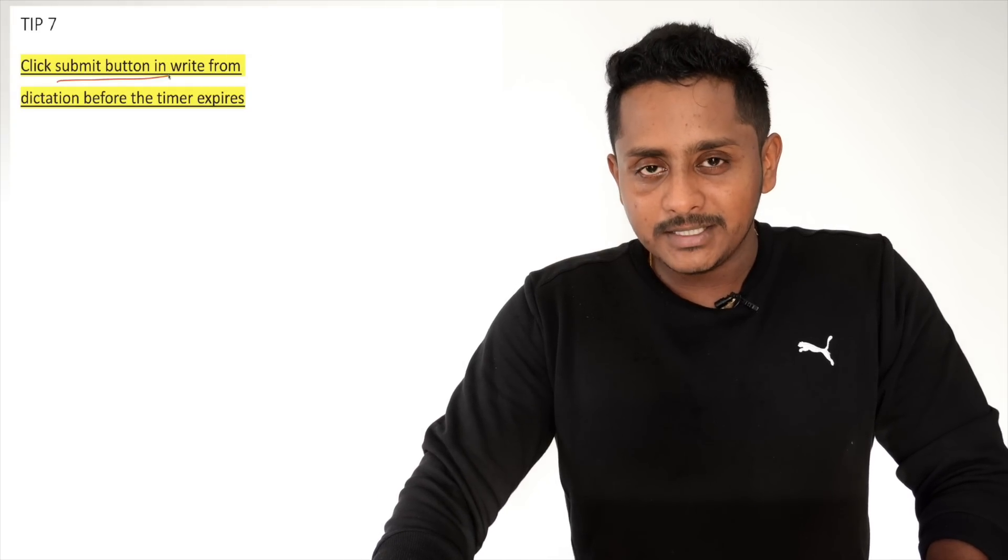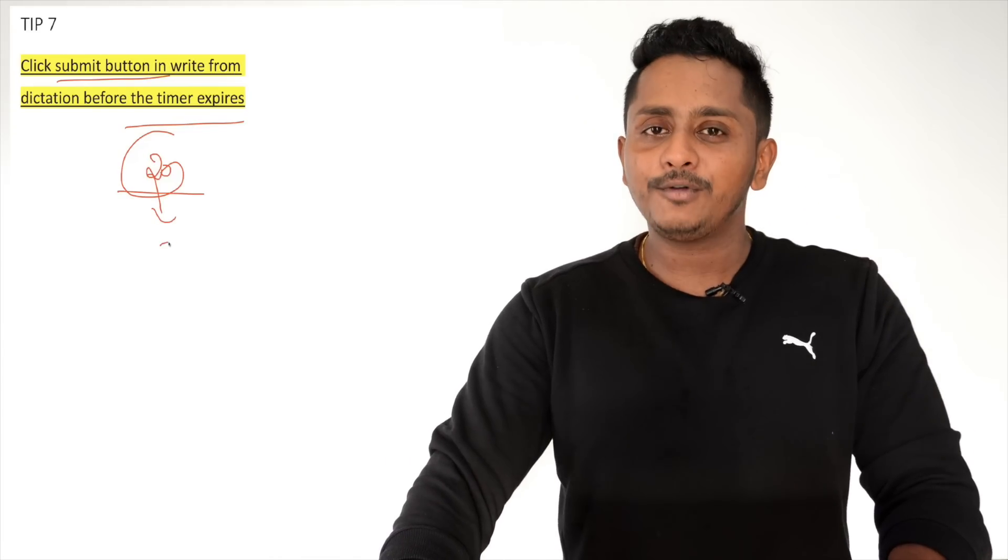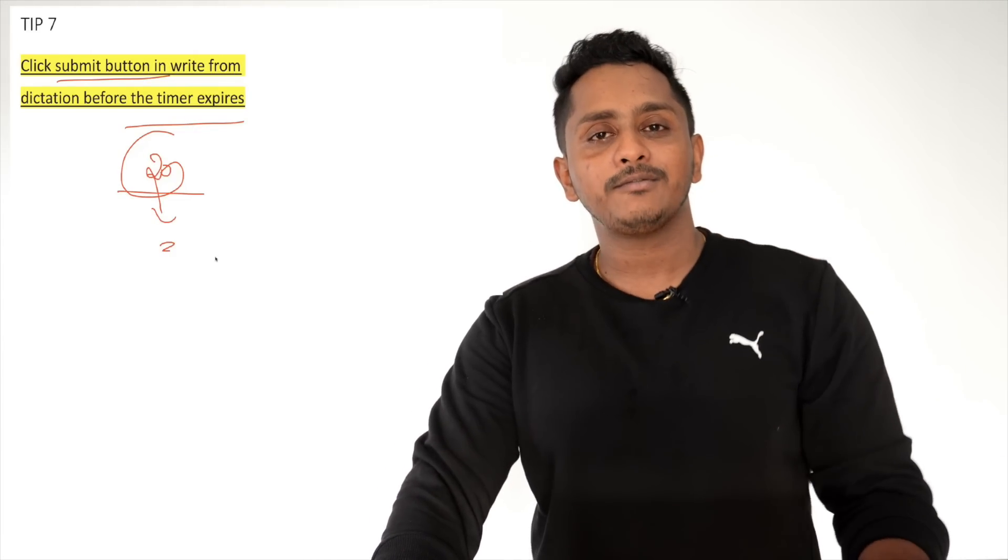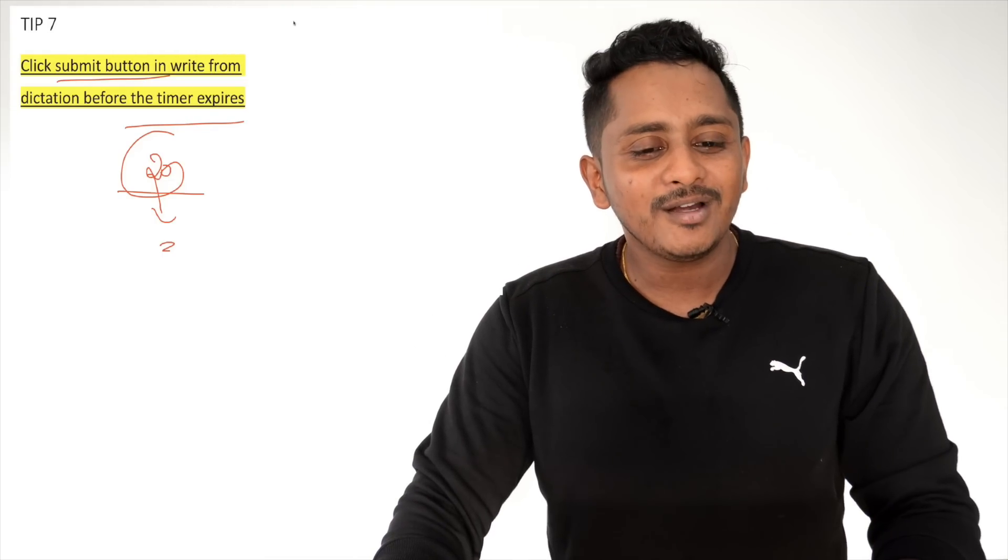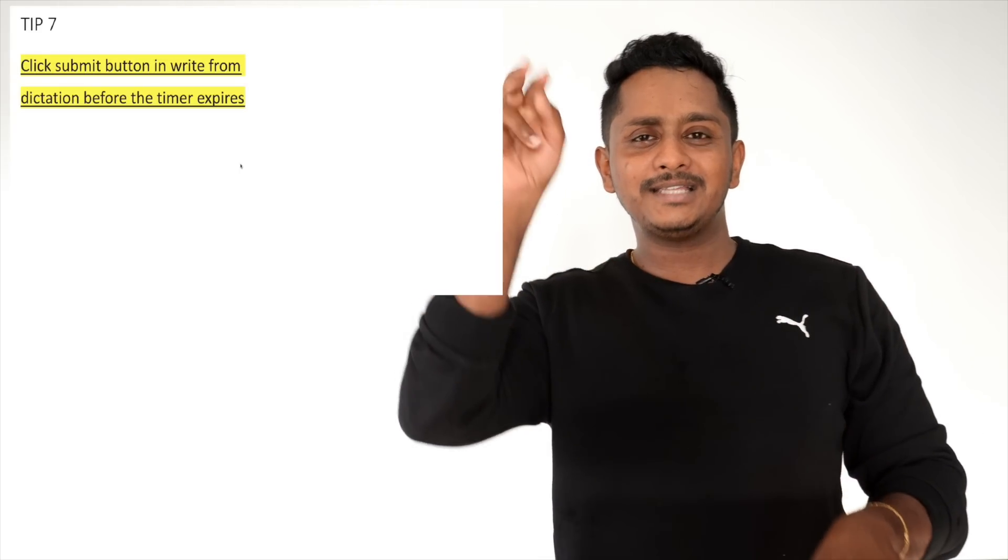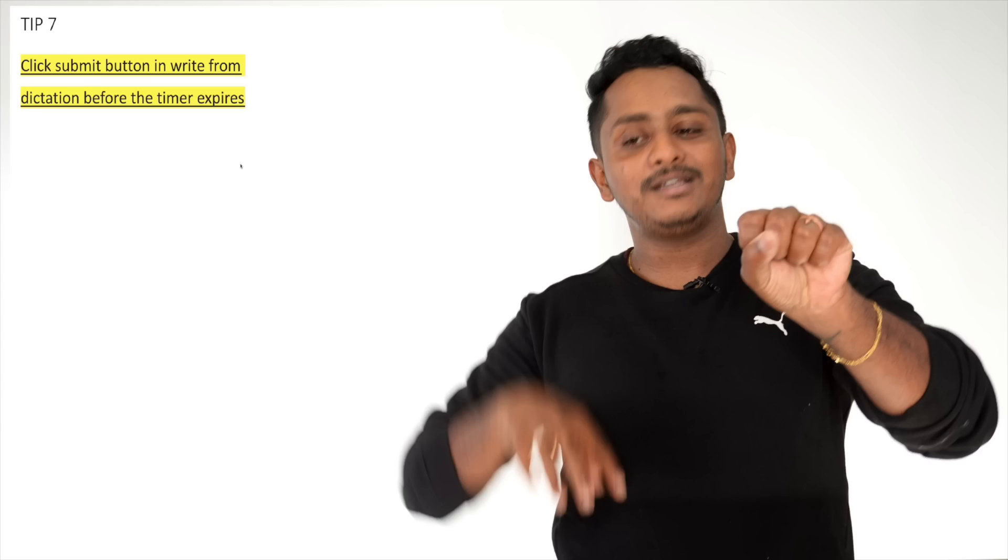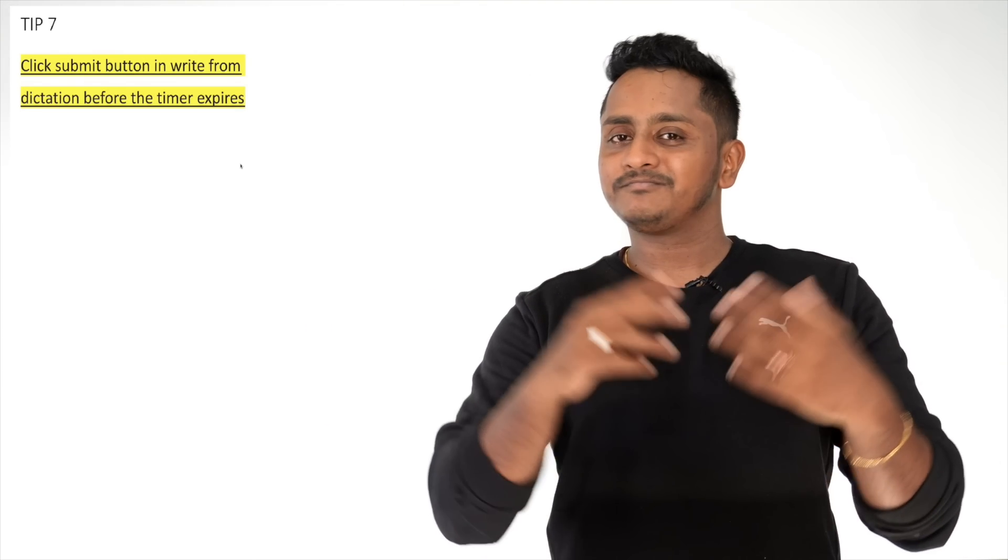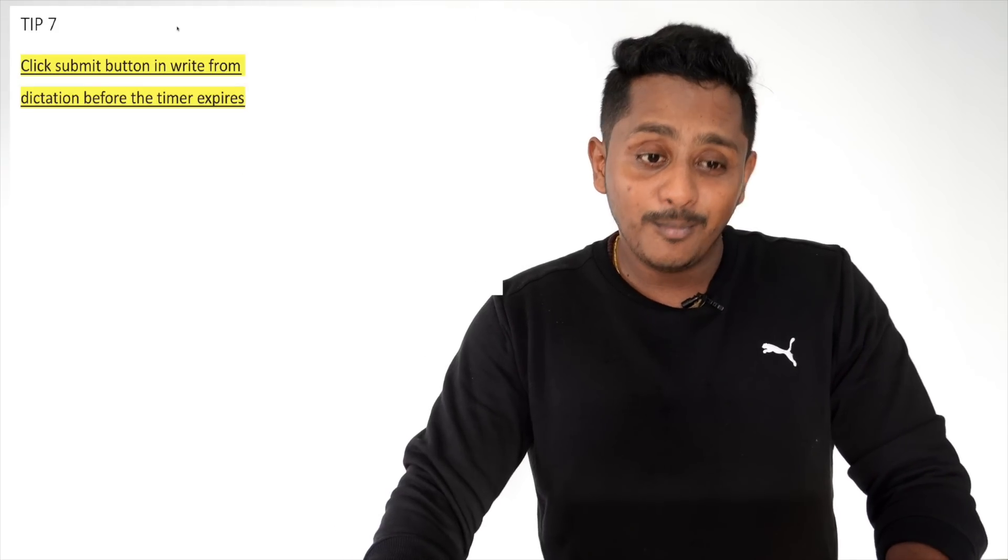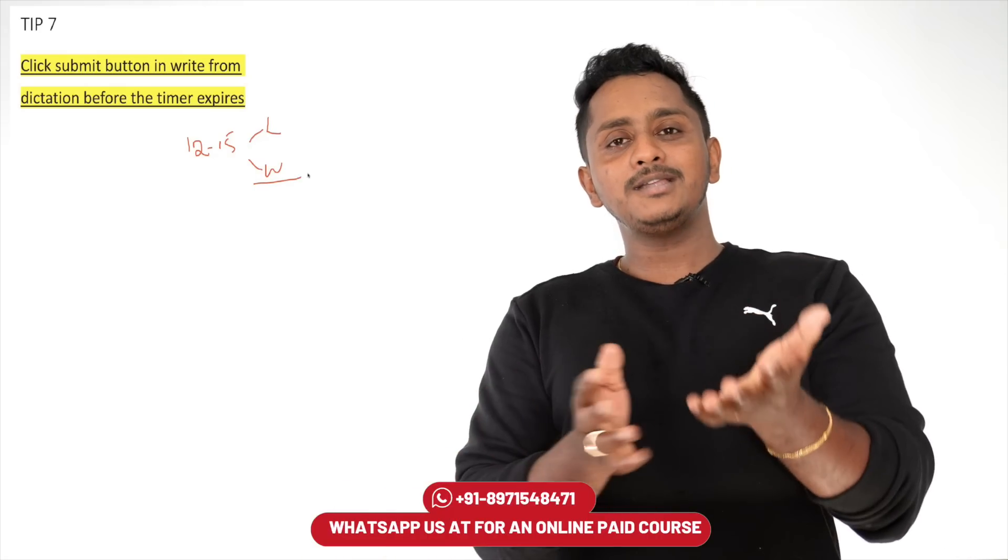Click the submit button in Write From Dictation before the timer expires. This is very very important. What happens usually is essay, 20 minutes is there, within that whatever you write and don't click next, it will be automatically saved because it's a timed module. Write From Dictation is not timed. Last Write From Dictation is not timed. So you wrote it and last 10 seconds are remaining, 10-9-8-7-6-5-4-3-2-1, and you did not click submit. This is not saved. The timer ends and it says test is over, the last Write From Dictation is not recorded. Possibly minimum 12 to 15 marks to listening and writing gone just. If your speaking is 90, reading 90, listening writing 62, don't join coaching. Give exam by applying this concept, you will get your marks.